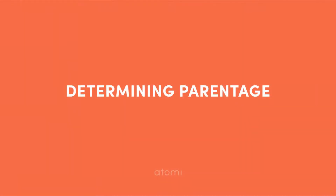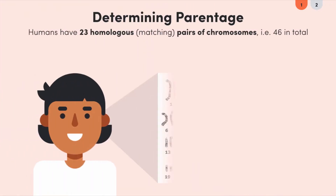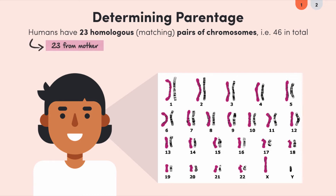As you probably all know, humans have 23 homologous, or matching, pairs of chromosomes — so 46 chromosomes in total. This is because we inherit our DNA from two parents: we get one set of 23 chromosomes from mum and another 23 from dad, so that we end up with 46 in total.